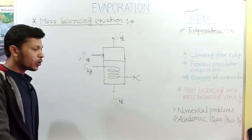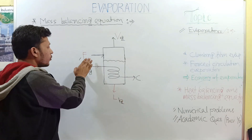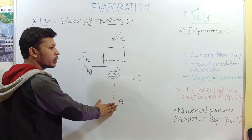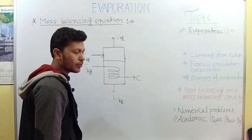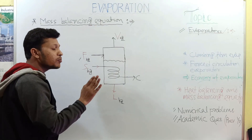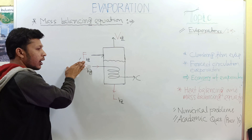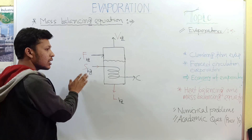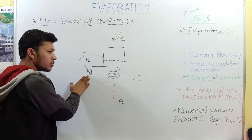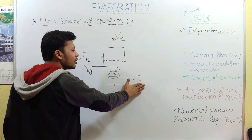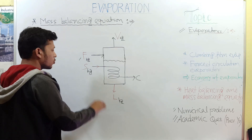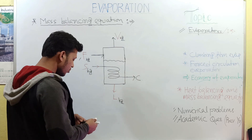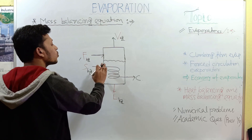In heat balancing, feed, steam, condensate, product, and vapor all contain heat energy. But in mass balancing, we only consider feed as the mass input, which is converted into two products: vapor and concentrated product. Steam is not considered as a mass — it is introduced as a heat source. Since steam is not counted as mass, condensate is also not considered in the mass balance.